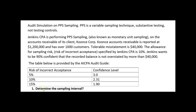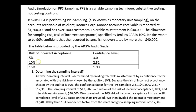There's a table provided: if the risk of incorrect acceptance is 5%, the confidence level to use in determining the sampling interval is 3.0. But we're taking a 10% risk — we want to be 90% confident that the recorded balance is not overstated by more than $40,000 — so our confidence level for determining the sampling interval is 2.31. That's the number we need, because it matches up with the 10% risk of incorrect acceptance.